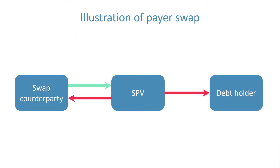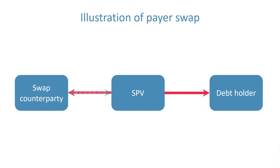In practice, the full sums of money in the swap are not exchanged. Instead, swap contract payments only settle on the net difference outstanding under the arrangement.